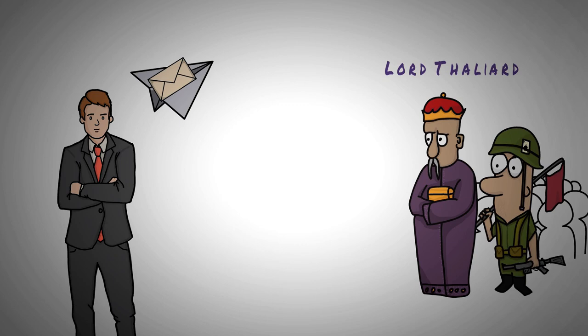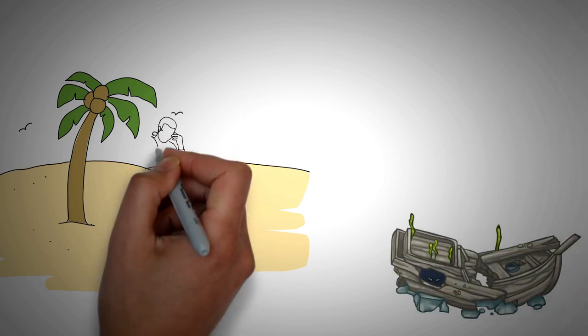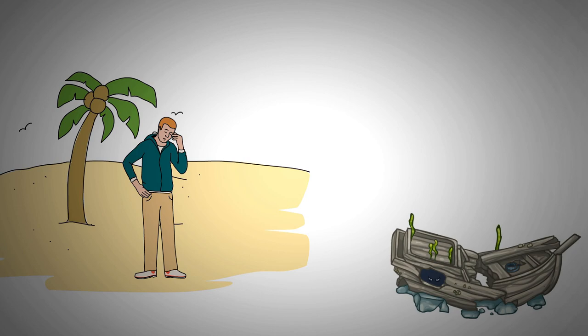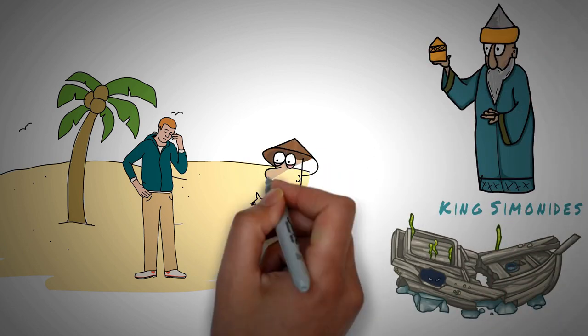Pericles did not receive the message, and he decided to set sail from Tarsus once again. But he was unfortunately shipwrecked by a storm, and he was the only survivor. He washed up on the shores of Pentopolis, which was ruled by King Simonides, and he was rescued by some fishermen.